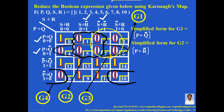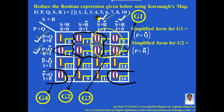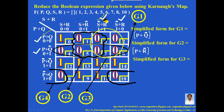Again, let me simplify G3. For every zero of G3, mark the left-hand side and the top. On the left-hand side, the stable variable is P. On the top, the stable variable is S complement, because R complement changes state from R complement to R. So the simplified form for G3 is P plus S complement.